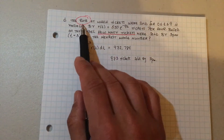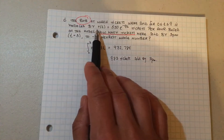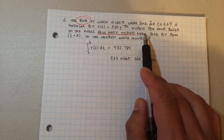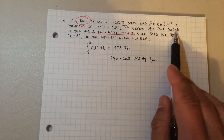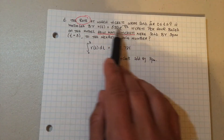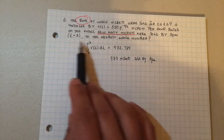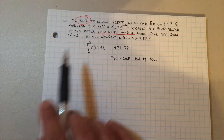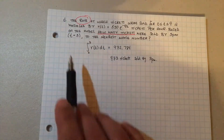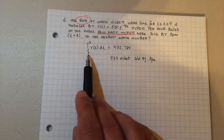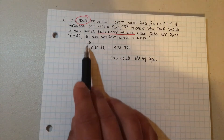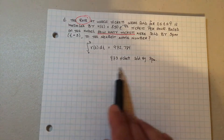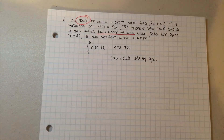Part D says the rate at which tickets were sold is modeled by a given equation in tickets per hour. Based on the model, how many tickets were sold by 3 p.m.? They're asking for a quantity, and they give us a rate — so you integrate the rate. Integrate from 0 to 3 and put it in your calculator. You should get 973 tickets sold by 3 p.m. Not too bad.